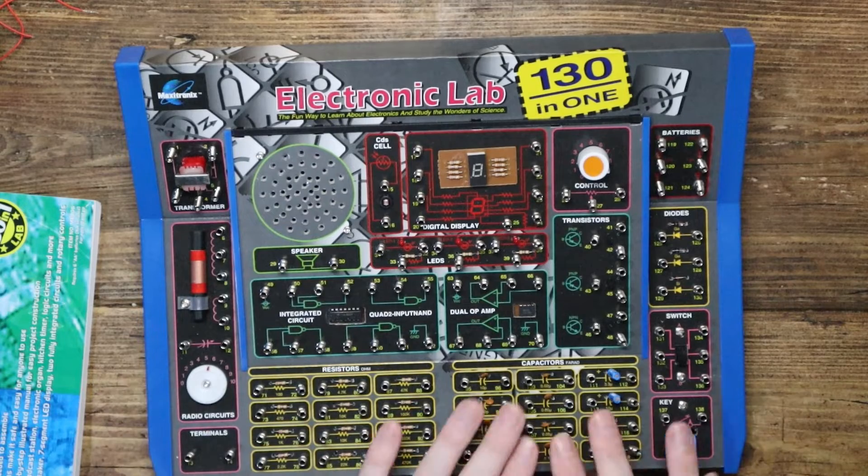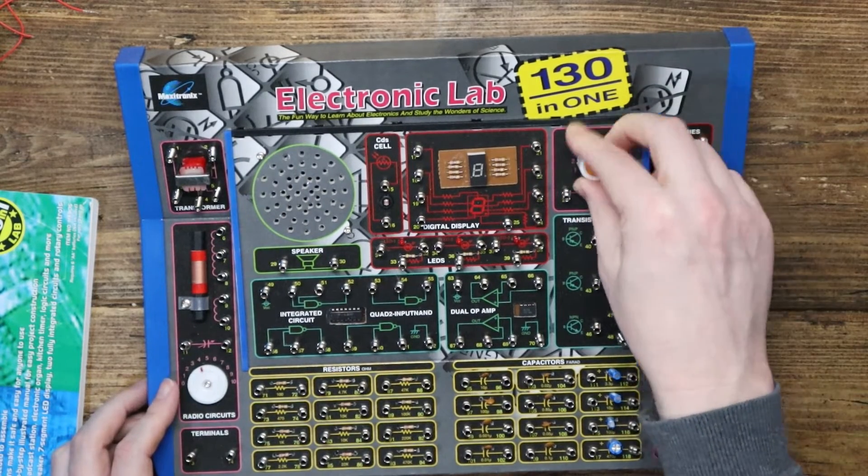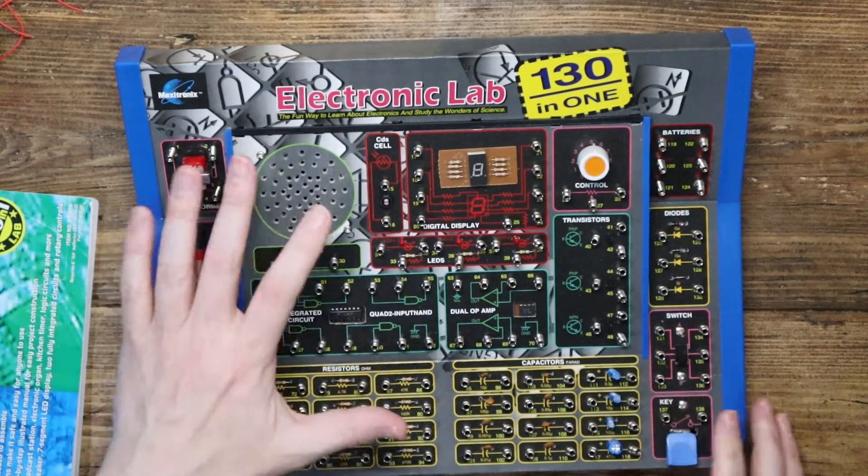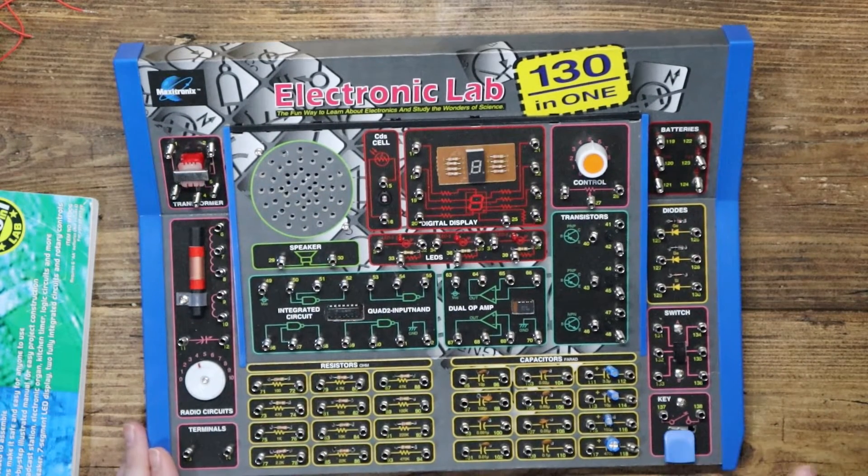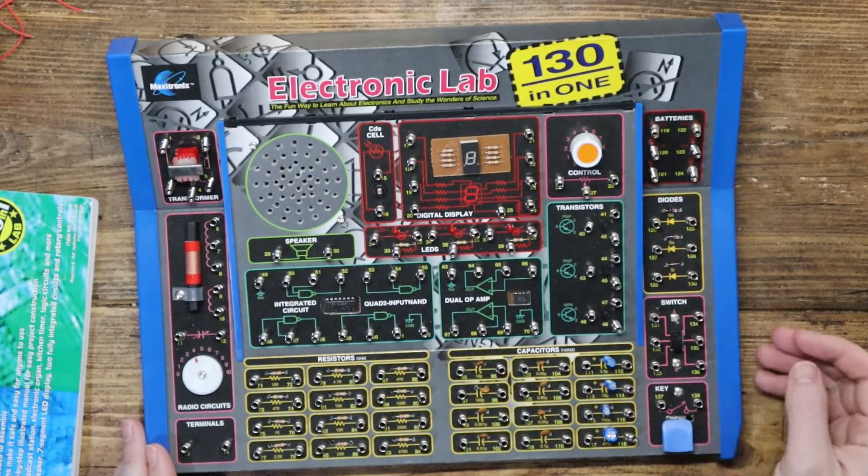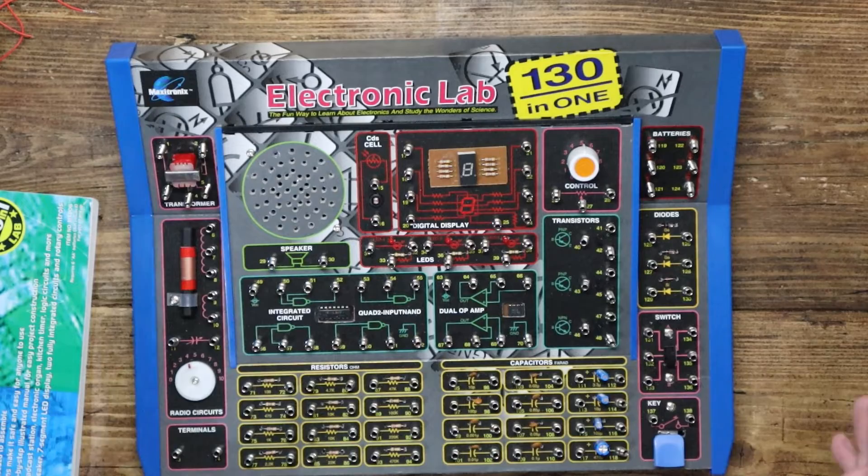You've got sections for resistors, capacitors, a transformer, you've got a radio circuit here, twiddly knob, you've got control up here for doing various things, you've got a speaker, you've got a little display there, a little switch. Got to have a switch to switch things on and off. A sort of multi-select switch there, diodes, batteries, all sorts.